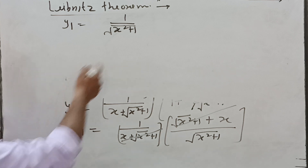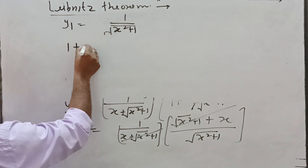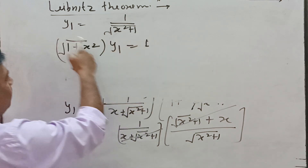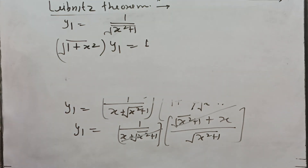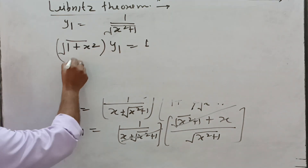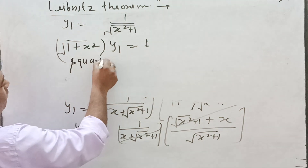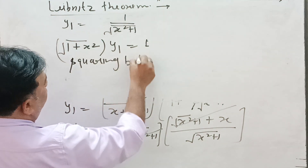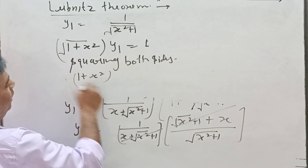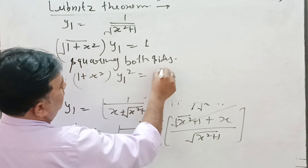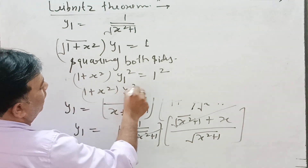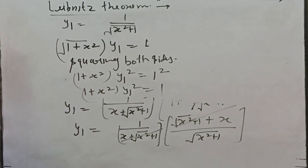Now cross-multiplying: √(1+x²) · y₁ = 1. Squaring both sides to eliminate the square root: (1+x²) · y₁² = 1.